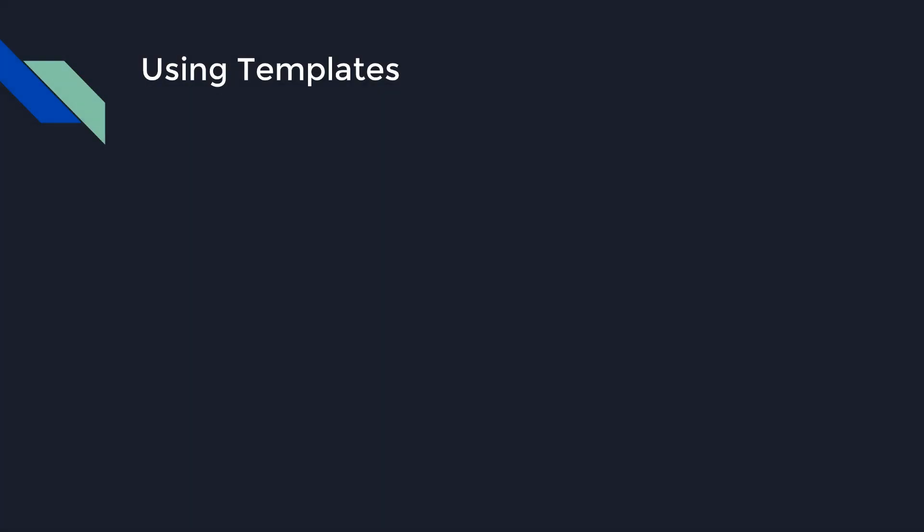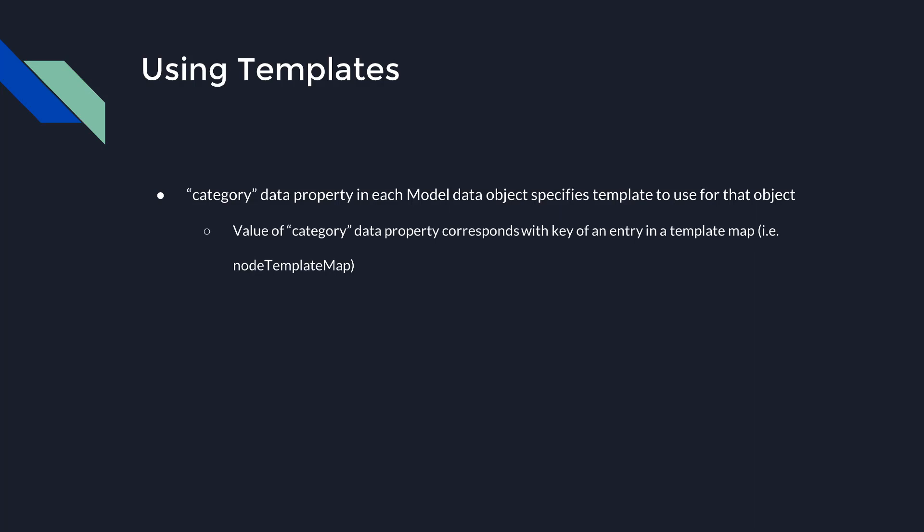How did GoJS know to use our node template to style both these nodes? The diagram model allows for separation between part data and part appearance. All model data objects support a data property called category. The value of this property corresponds with the template to use when GoJS determines this part's appearance. Not supplying this property, as we did earlier, makes the rendered part take on the style defined by its corresponding template, or the default styling for that part if no node template is provided.